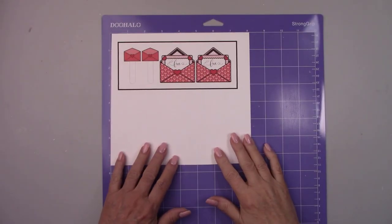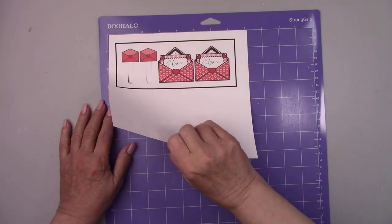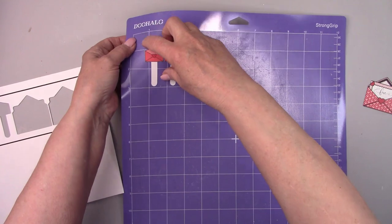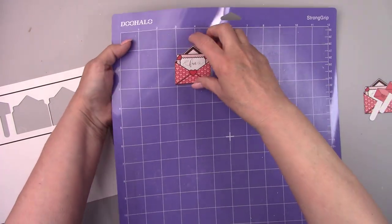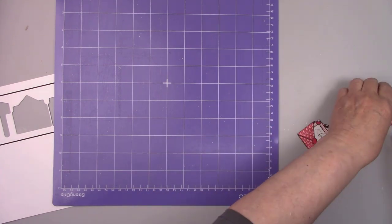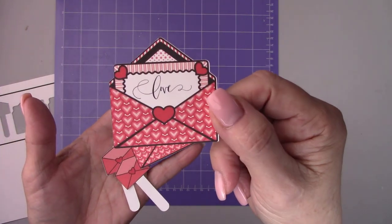I cut these cute little envelopes and hearts out with my Cricut machine. If you're printing from an inkjet printer, you'll need to seal everything before you cut them out. This will stop the ink from running when you decoupage them to your project. I use my spray mat sealer. It works great and dries fast. And I usually give it about 3 quick coats.